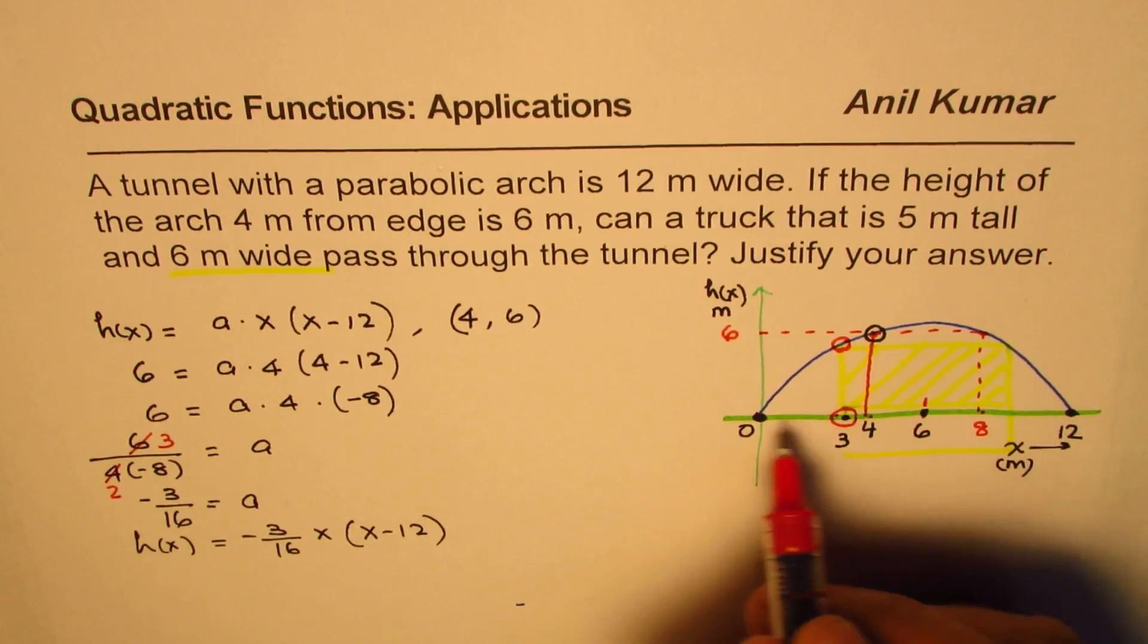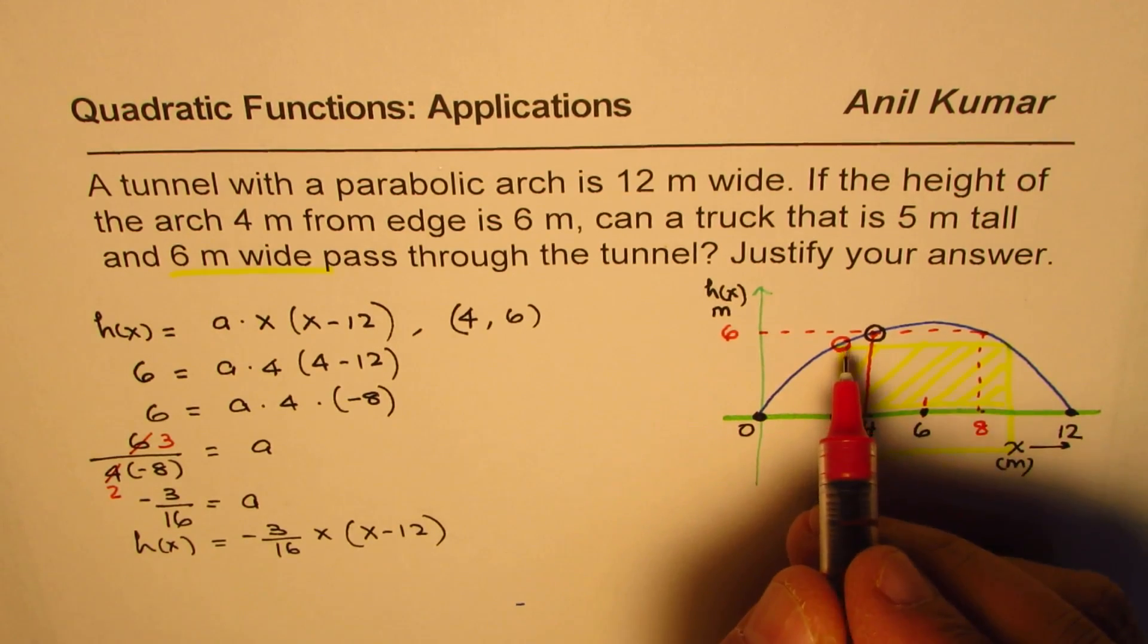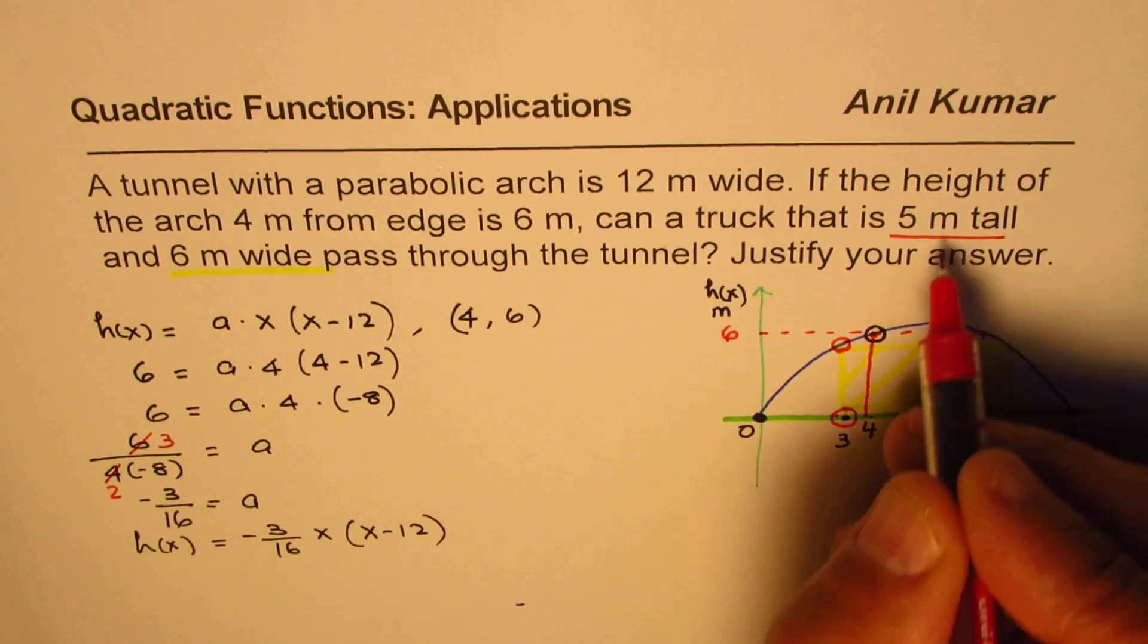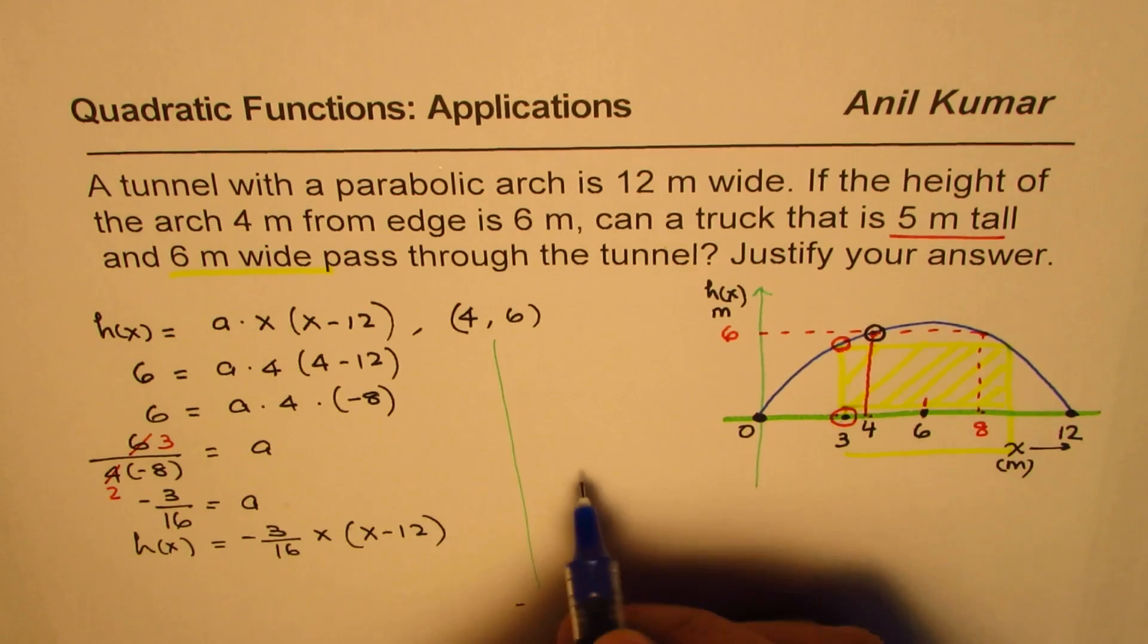Now we want to figure out if this truck can pass through the arc. We are given it as 6 meters wide. So from the center, it is 3 units to the left, 3 on the right. So this point is the edge of the truck and we have to check this height. Height when the distance is 3 meters. If this height is more than 5 meters, then the truck can go through. Otherwise it won't. So we will check this point.